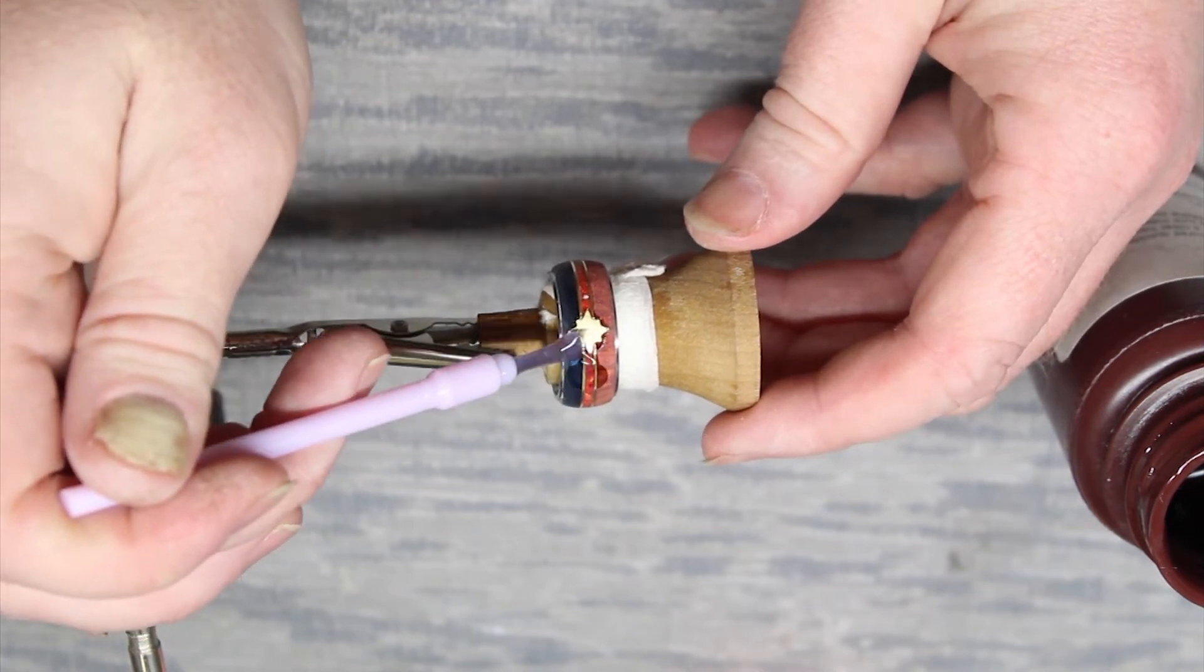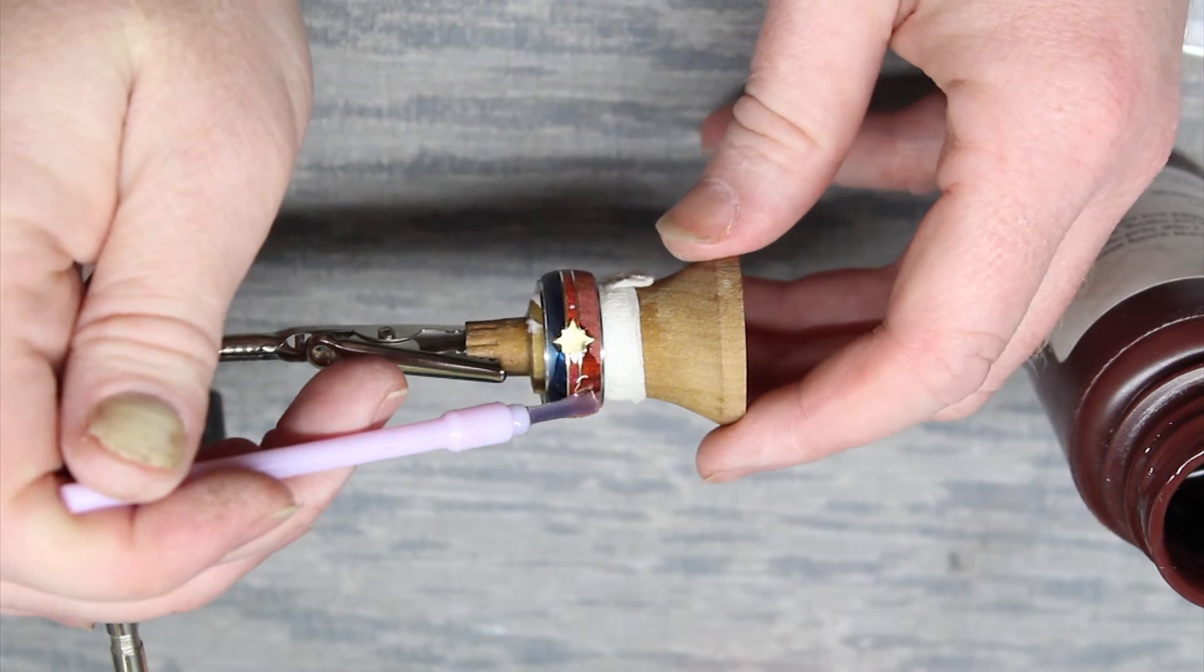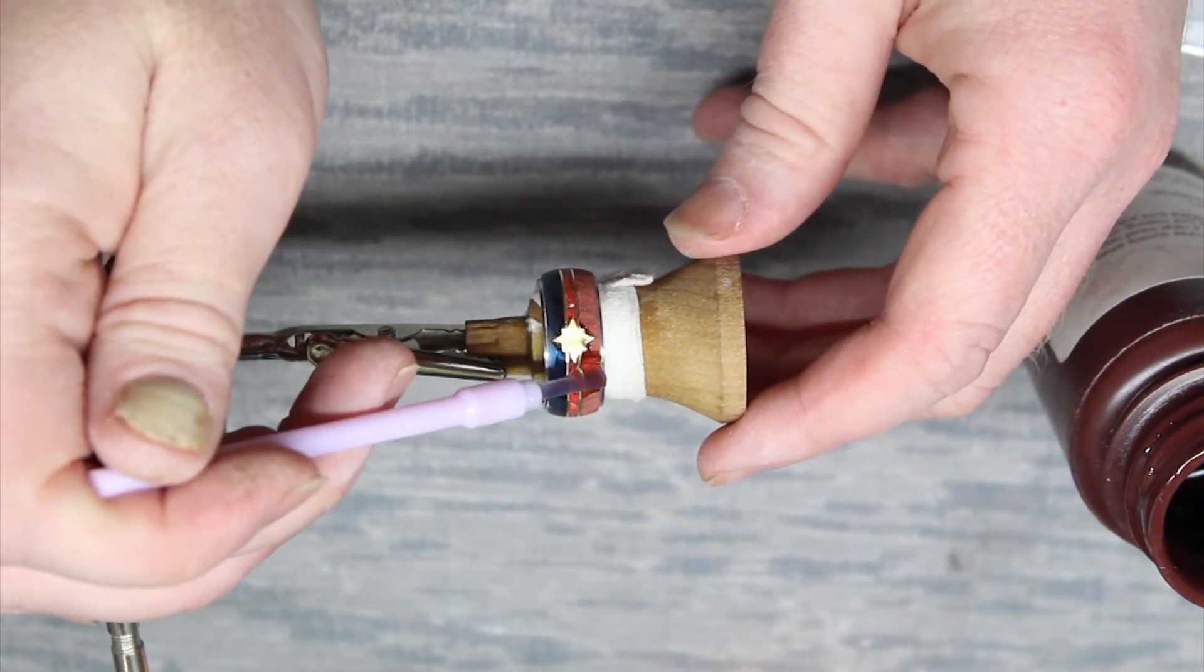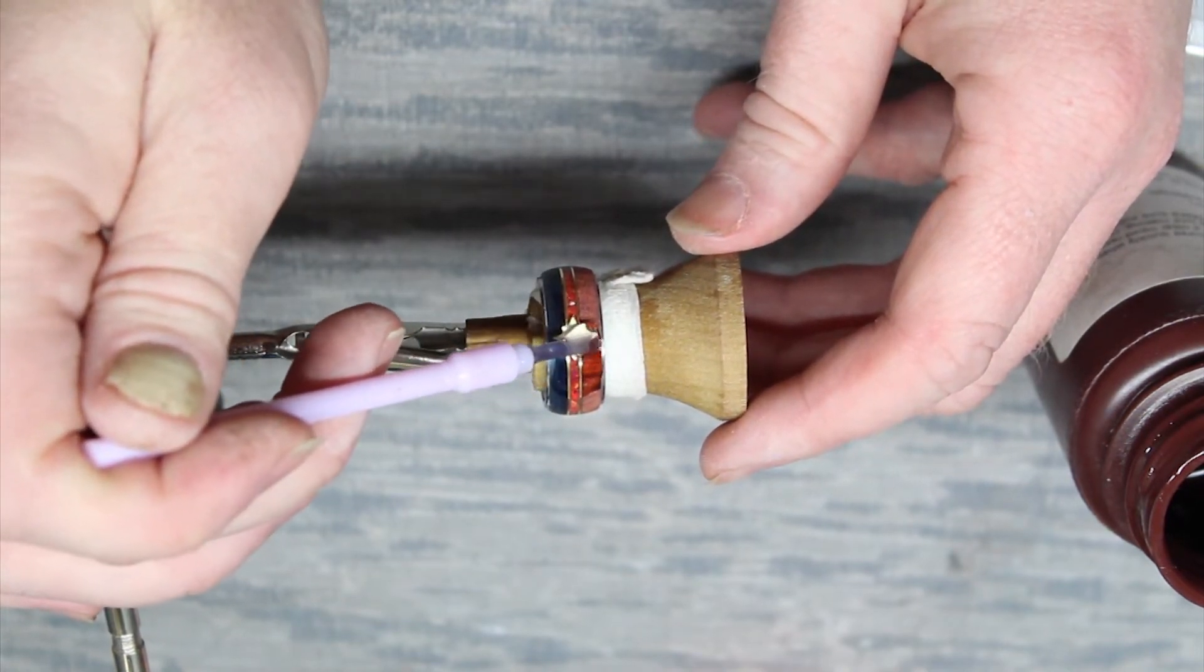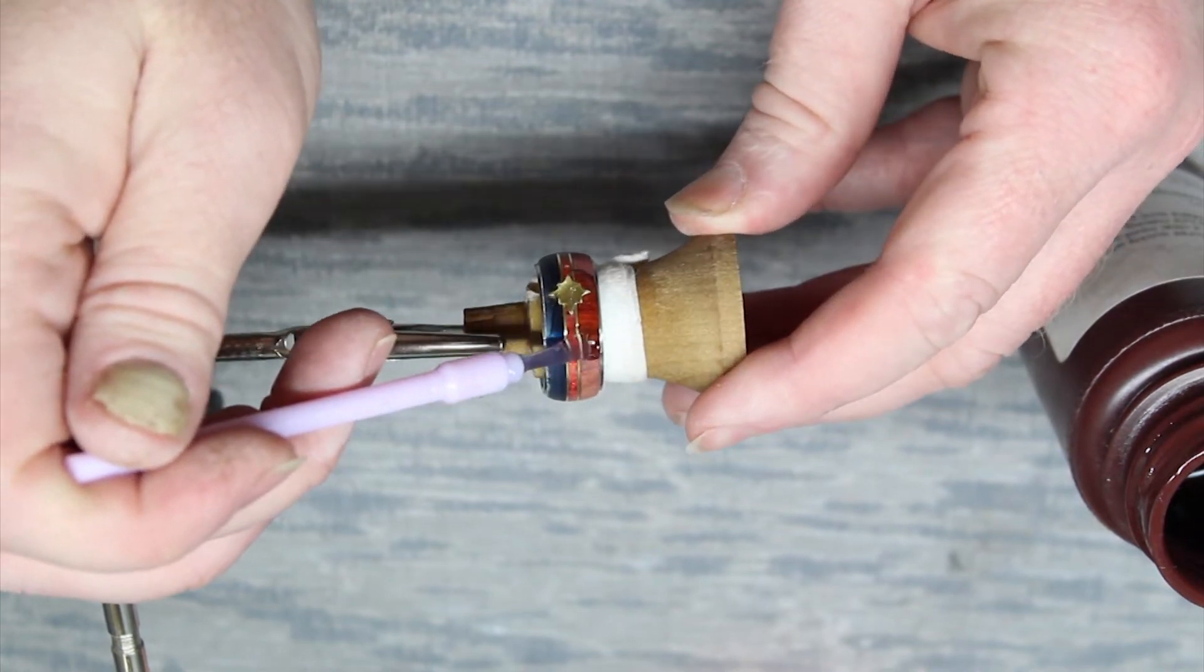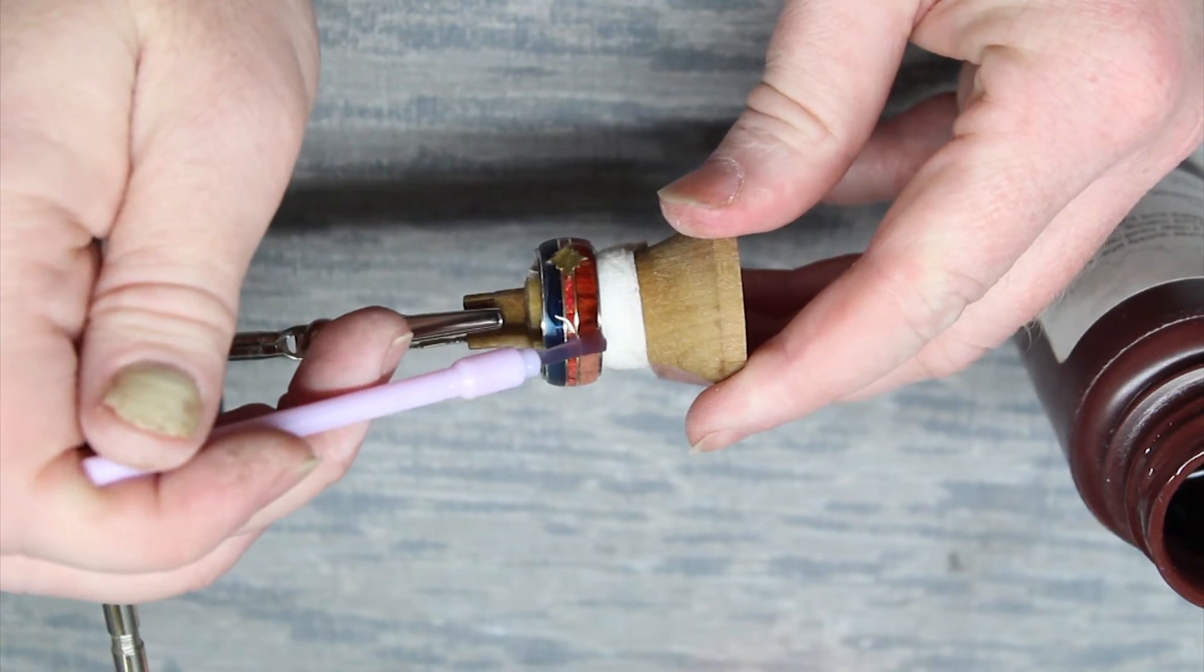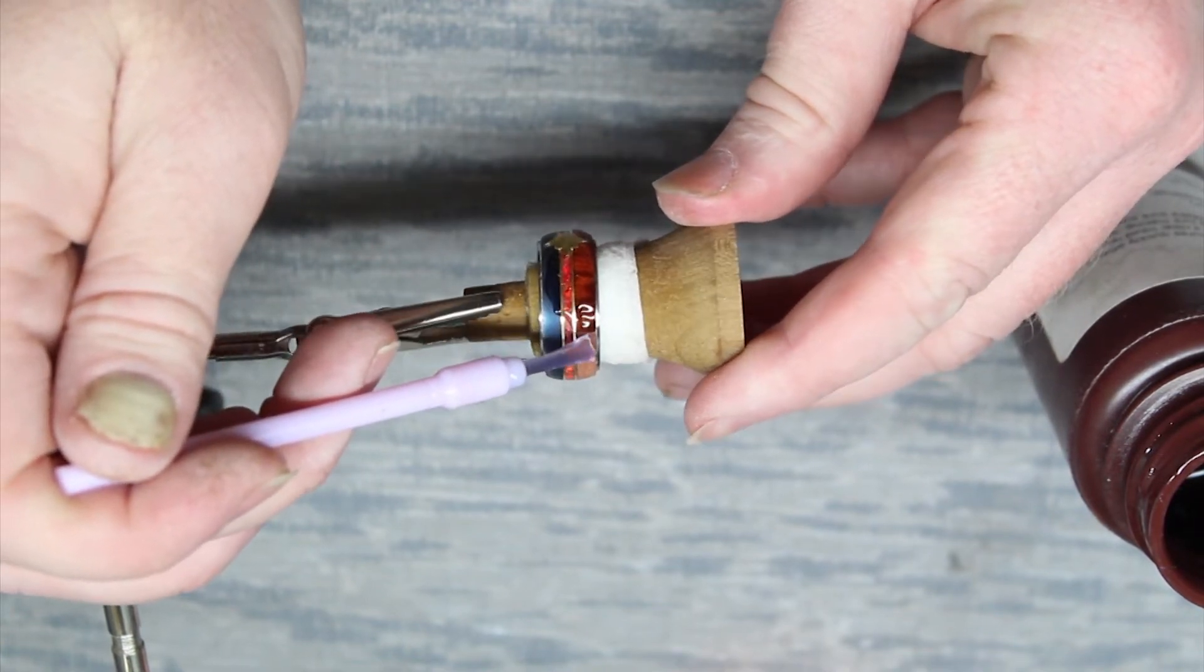I start by taking a little bit of Illumi UV and I work it from the edge in. Typically I just started with the star there because it needed a little extra. You'll see I've got a little pool that I'm just working around the ring.